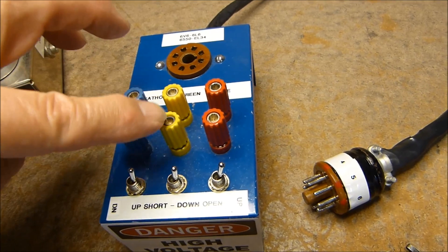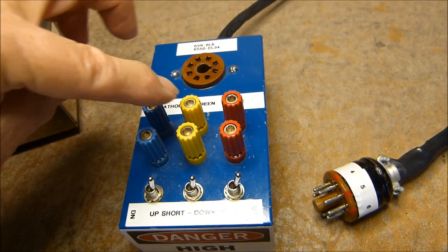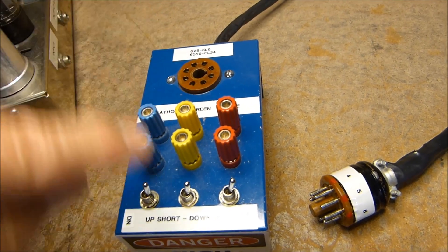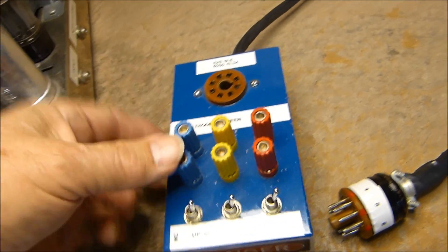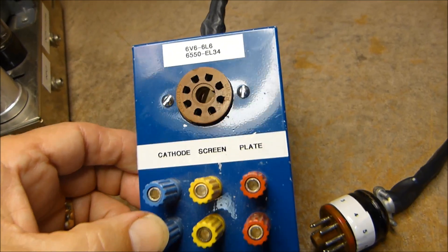Pin 4 comes over here, and this one goes to pin 4 of the socket and this shorts them. Same thing with pin 8, which is the cathode. I've labeled plate, screen, and cathode.